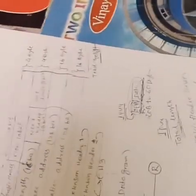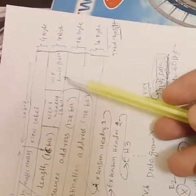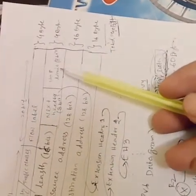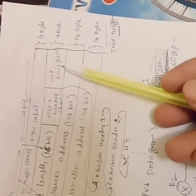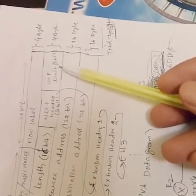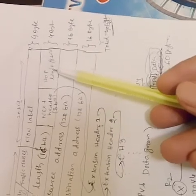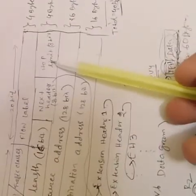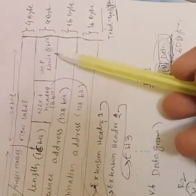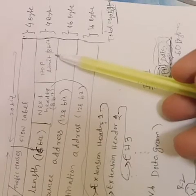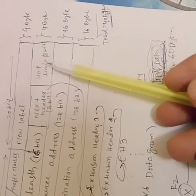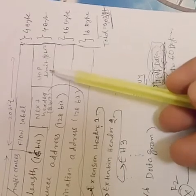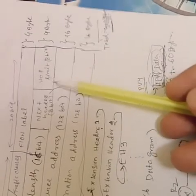Another field is hop limit. In IPv4 it is called TTL — time to live — but in IPv6 we use hop limit. This is also an 8-bit field. TTL is not actually time; it is actually the number of hops that the packet can take before getting discarded.